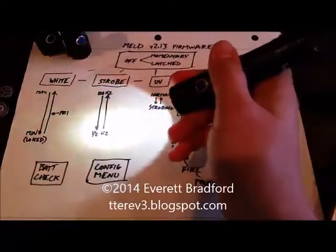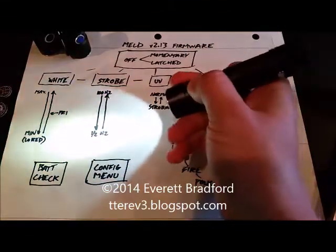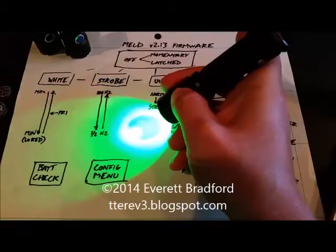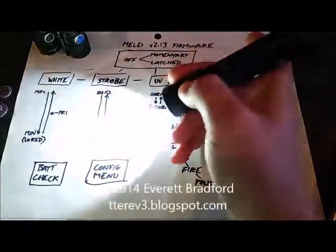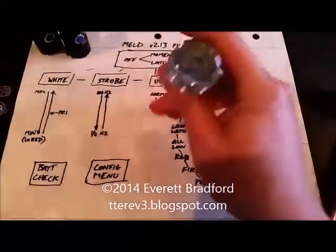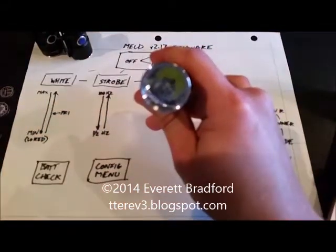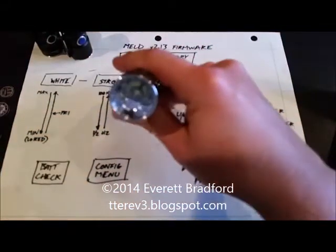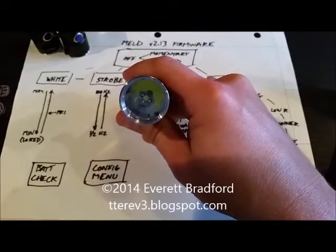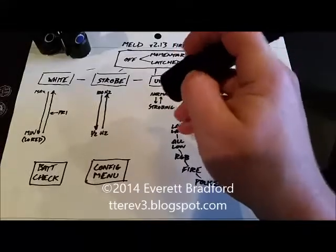The first option is the locator beacon, indicated by a low red blink. To activate that feature, I'll hold down until the light turns green. What the locator beacon does is anytime the light is off, it will blink the red LED very dimly every 4 seconds, so you can find the light if you lose it in the dark.